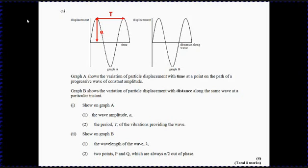On graph B, show the wavelength. So the same distance on there is the wavelength, but in this case actually is a distance rather than the time.